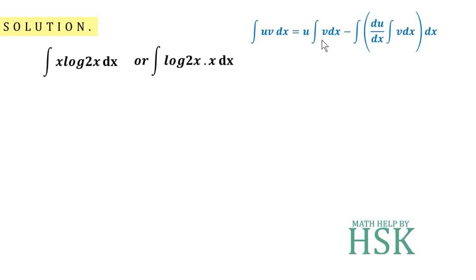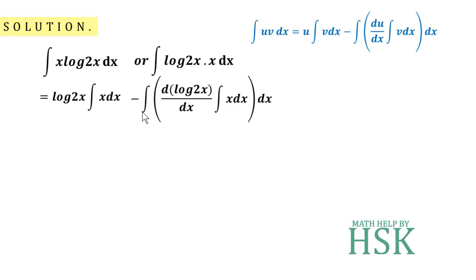Writing it as the product of log(2x) into x, applying the integration by parts formula, I get: log(2x) into the integration of x, minus d/dx of log(2x) into the integration of x and the integration of the product obtained in the bracket. Now, the integration of x is x²/2, applying the formula of integration of xⁿ, that is xⁿ⁺¹/(n+1).